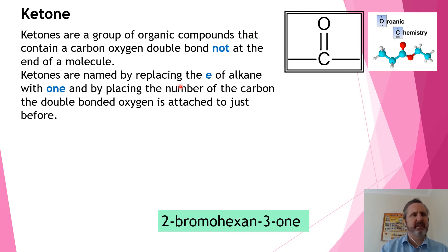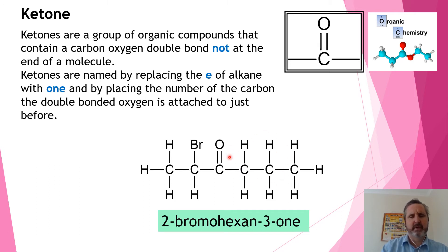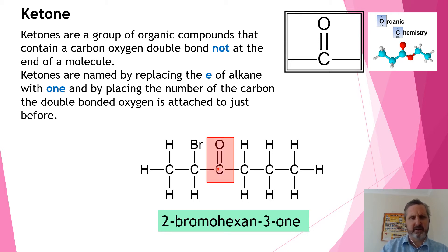For a ketone group, we replace the E with ONE. Usually, because the ketone can occur anywhere along the molecule, we put a number before it to denote which carbon it's attached to. Here's an example: in the middle of this carbon chain of six carbons is a double bond O. Numbering from the side that gives it the smallest number, it is on carbon three. The bromo group is on carbon two, so this is called 2-bromo-hexan-3-one.